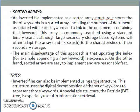The main disadvantage of using sorted arrays is that updating the index — for example, appending a new keyword to the already existing sorted array — requires creating the document and the link to the document, which is an expensive and time-consuming process. On the other hand, sorted arrays are easy to implement and are reasonably fast. Inverted files can also be implemented using a trie structure. This structure uses the digital decomposition of the set of keywords to represent those keywords. A special trie structure, the Patricia or PAT tree, is especially useful in information retrieval.